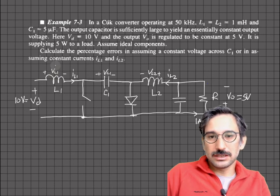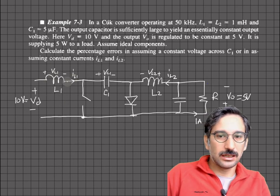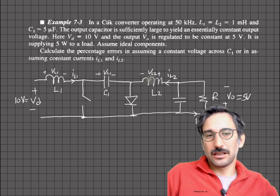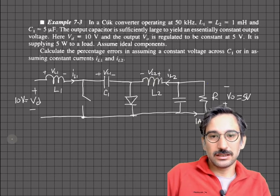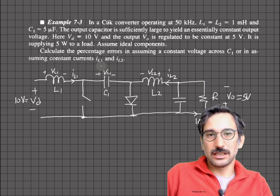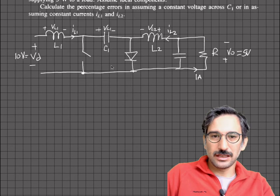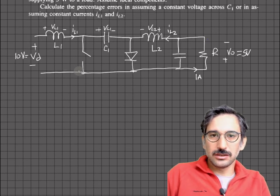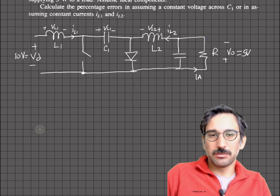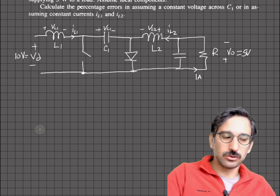In some cases the inductor currents can also be assumed constant, but in reality they are going up and down, and while they do so they change the voltage in the capacitor. So let's first find out the duty cycle and the average capacitor voltage. We know the Cuk converter has the same voltage relations as a buck-boost converter.